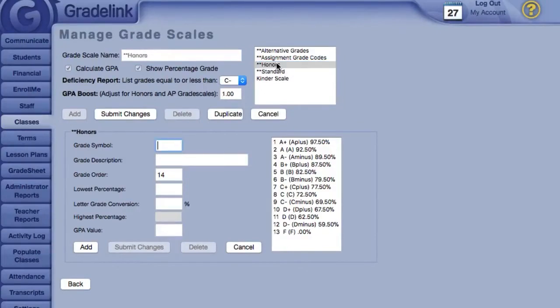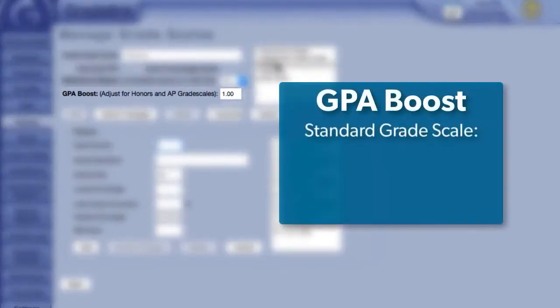The Honors Gradescale is almost identical to standard, except it has a 1-point GPA boost. With the Standard Gradescale, an A would be worth 4 points, but with the Honors Gradescale, an A would be worth 5 points.